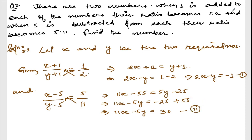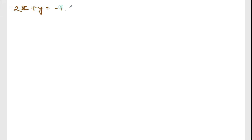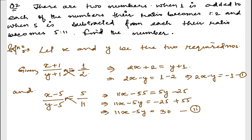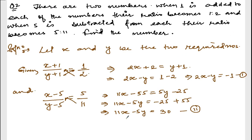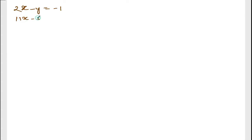We have two equations. Let me take the next page and try to solve them. Equation one: 2x - y = -1. Equation two: 11x - 5y = 30. Now we will use elimination to solve this system.